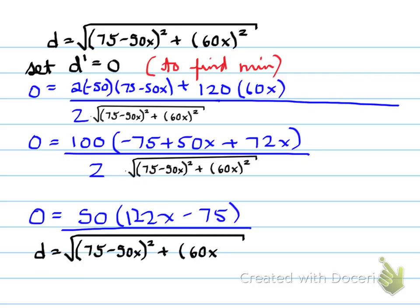When we do that, we can collect like terms, and we get this over the bottom. Now, why is there 50 there when it was originally 100? Well, if you look carefully, folks, 100 divided by 2 is just 50. So that's where that came from, and this got simplified to give you 122x minus 75.